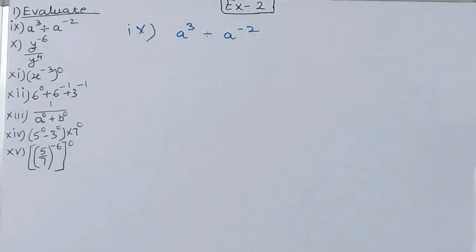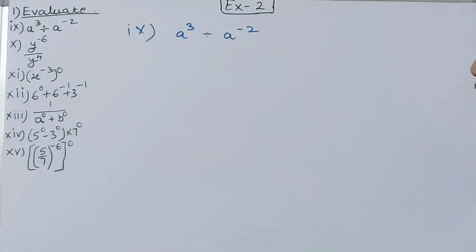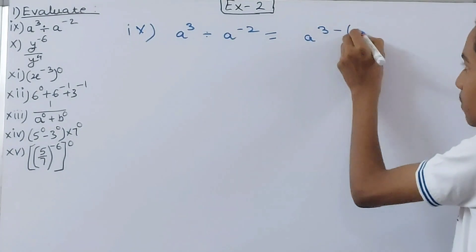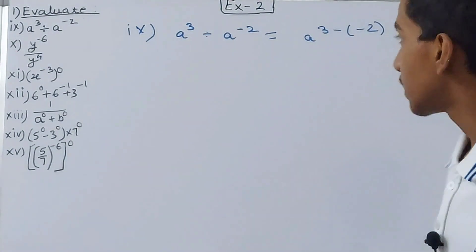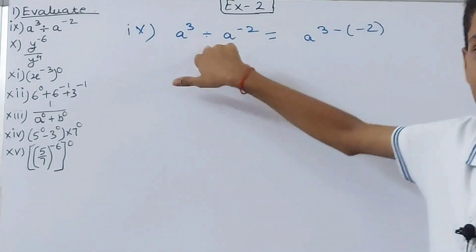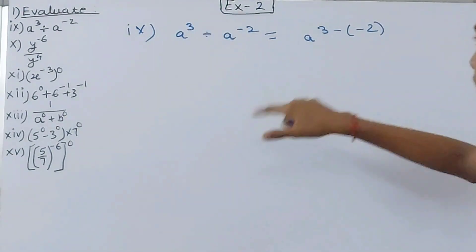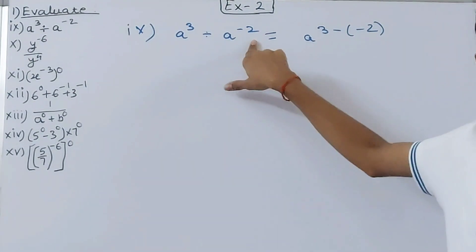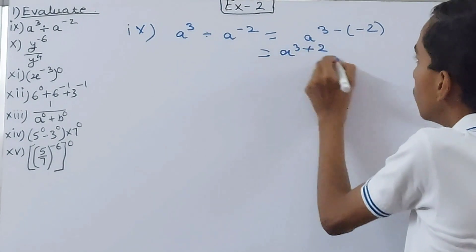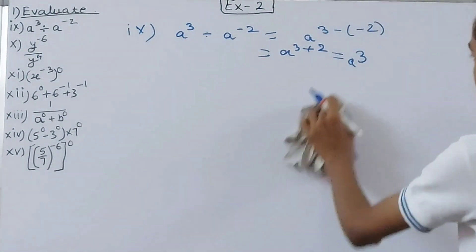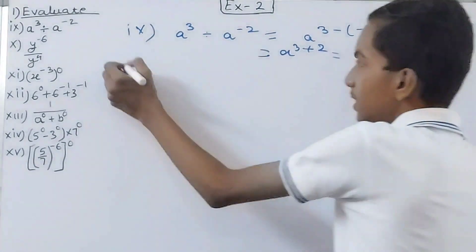The 9th part is a to the power 3 divided by a to the power minus 2. When dividing with the same base, subtract the powers. So we do a to the power 3 minus (minus 2). The bases are the same so we subtract the exponents: 3 minus minus 2 equals 3 plus 2, giving a to the power 5.